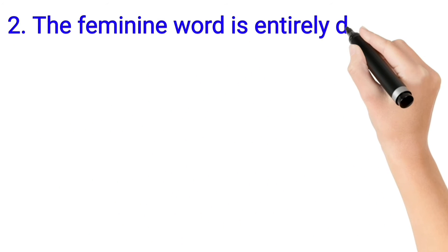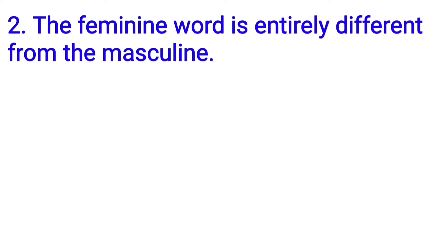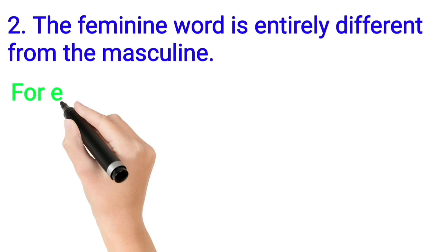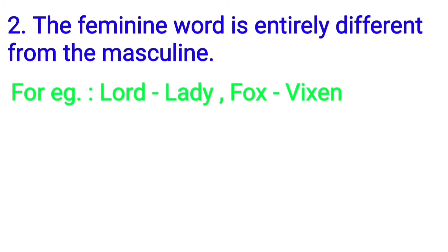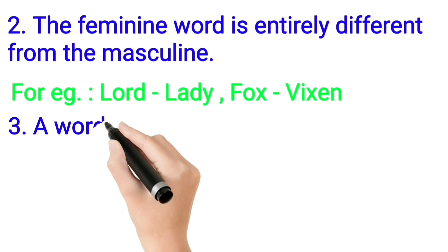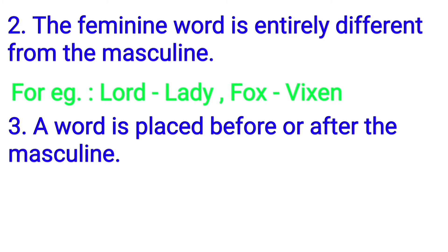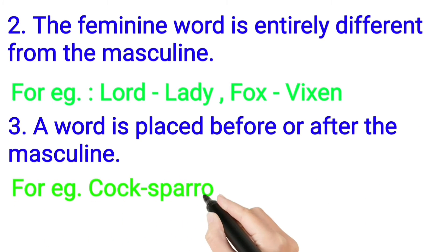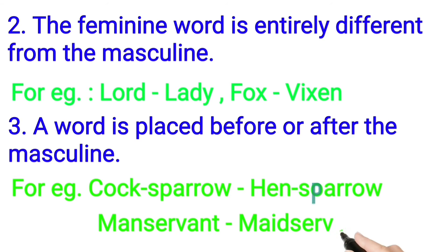Second way: the feminine word is entirely different from the masculine. For example, Lord becomes Lady, Fox becomes Vixen. Third way: a word is placed before or after the masculine. For example, Cock Sparrow becomes Hen Sparrow, Manservant becomes Maidservant.